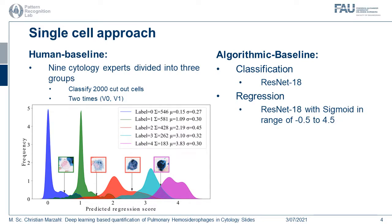Let me continue by explaining our single-cell approach in a little more detail. First, we created the human baseline by asking 9 pathology experts to classify 2,000 cut-out cells into the 5 grades. These 9 experts are divided into 3 groups depending on their level of expertise in cytology. Furthermore, we asked them to do this twice — once and after 2 weeks — to examine the intra-observer variability besides the inter-observer variability. We also created an algorithmic baseline with a classification approach based on ResNet-18, and a regression approach also based on ResNet-18 with a sigmoid activation in the range from minus 0.5 to 4.5.